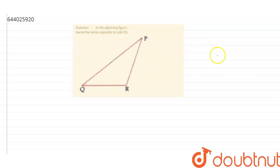So we are given a figure - triangle PQR - and which is the side PQ? This is side PQ, and we have to name the vertex which is opposite to PQ.